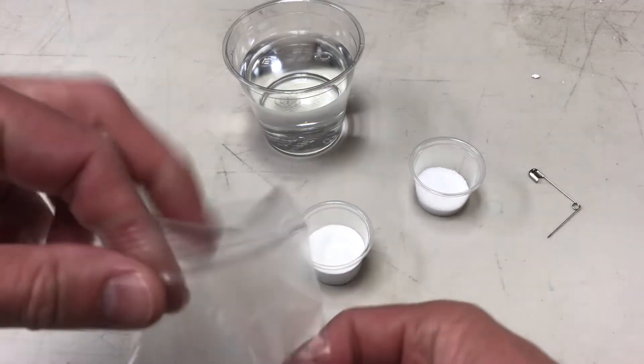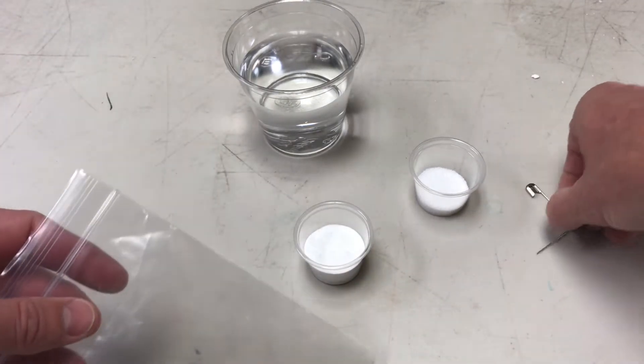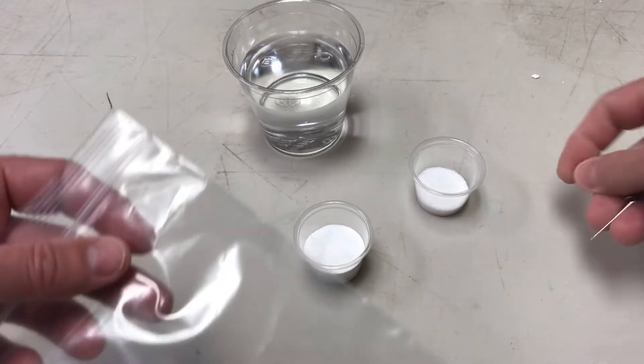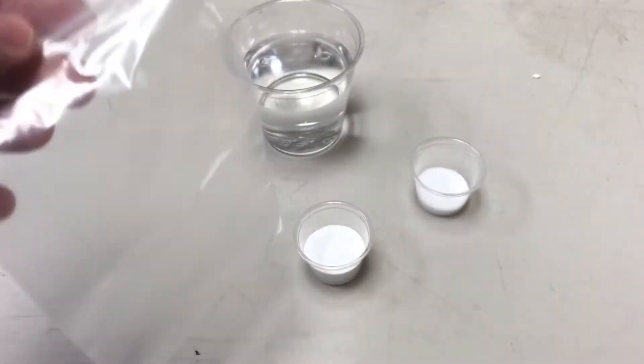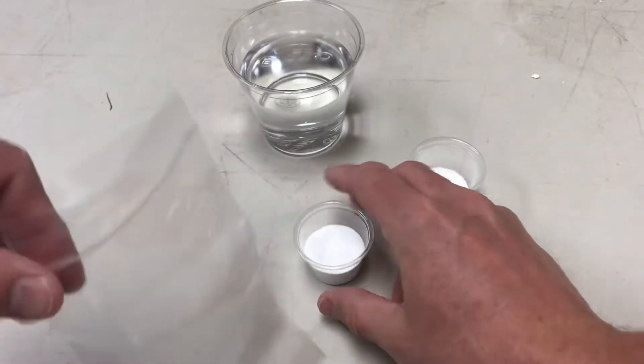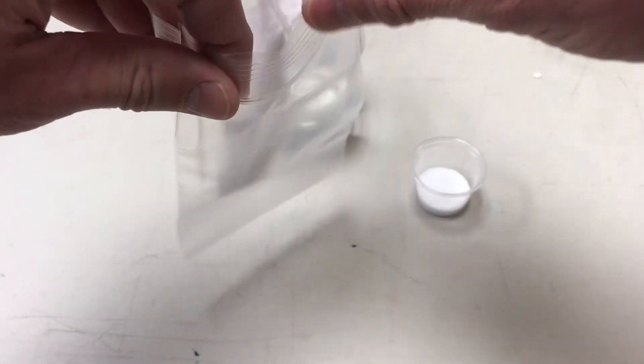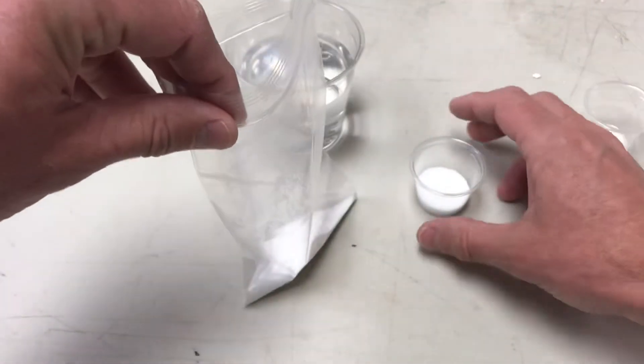So here we go. Actually, to start out, I'm going to use this safety pin I brought just to carefully punch a little hole up here. And this is to release any pressure so my bag doesn't pop. Nothing crazy is going to happen, I just don't want it to pop and make a mess.